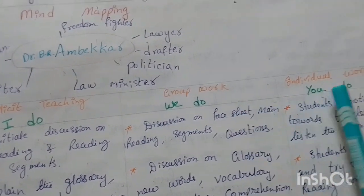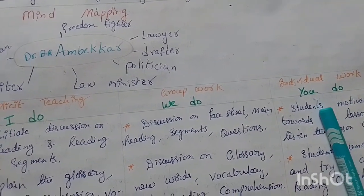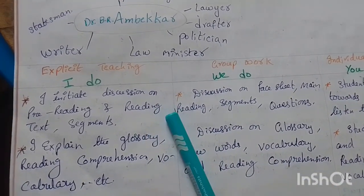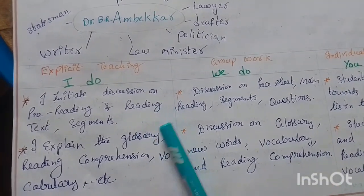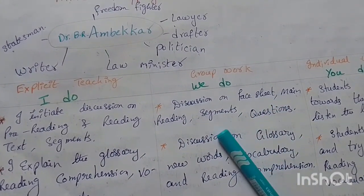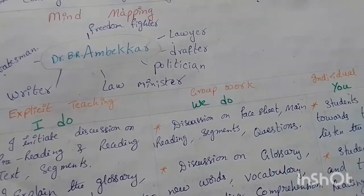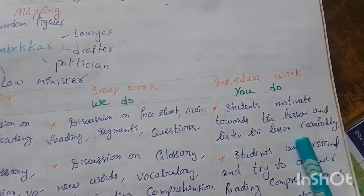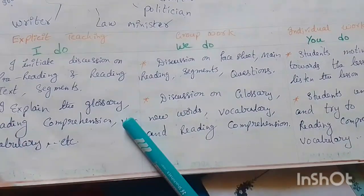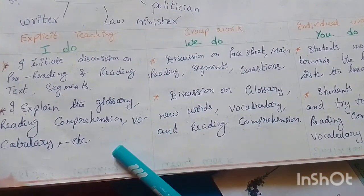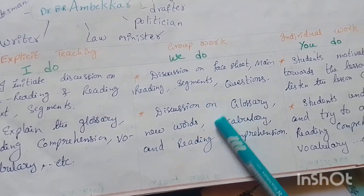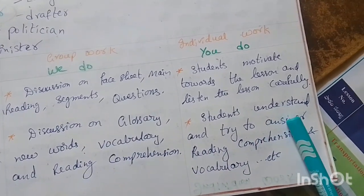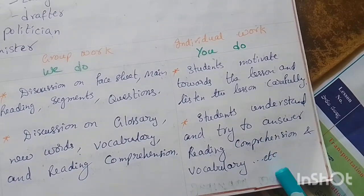Explicit teaching or 'I do' activity, group work or 'we do' activity, and individual work or 'you do' — the students participate here. For 'I do': I initiate discussion on pre-reading and reading text segments, discussion on the face sheet, main reading segments and questions. Students are motivated towards the lesson and listen carefully. I explain the glossary, reading comprehension, vocabulary, etc. Discussion on glossary, new words, vocabulary, and reading comprehension follows. Students understand and try to answer reading comprehension and vocabulary.